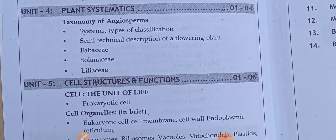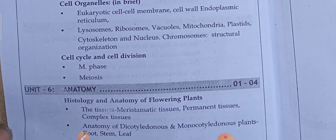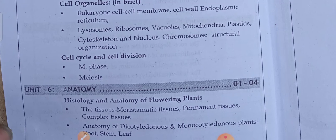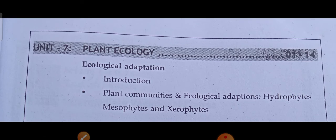Unit five: cell structure and functions — the cell as the unit of life, cell organelles, cell cycle and cell division. Unit six: histology and anatomy of flowering plants — this is anatomy of plants, not of human beings. The seventh and last unit is plant ecology — ecological adaptations.